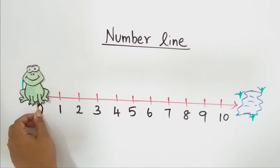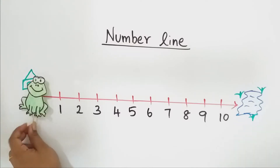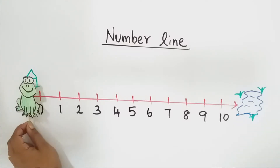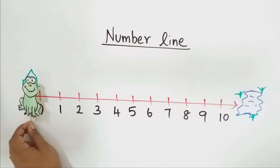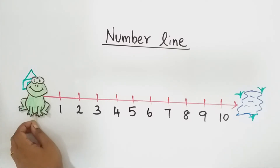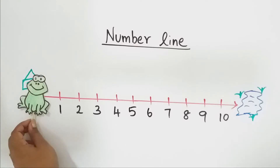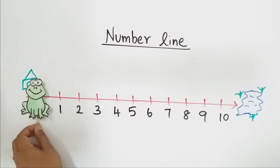So now this froggy is standing in zero. When it has to go to the pond, it has to jump to the next number. The next number means it is the after number. So shall we start?